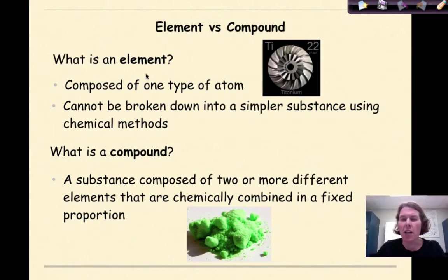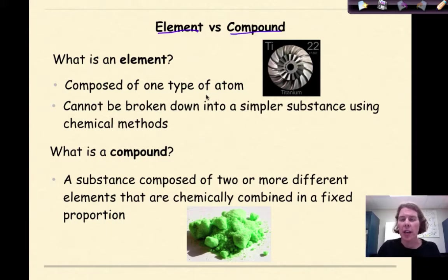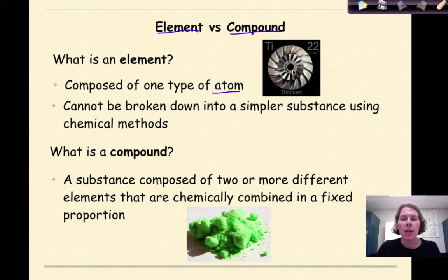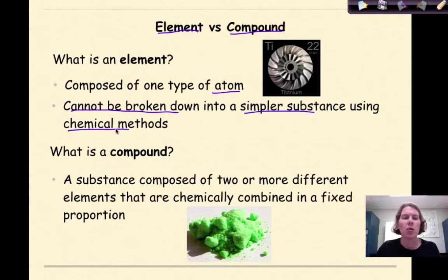Let's start out by talking about an element versus a compound. This goes back to atomic structure, the periodic table, and bonding, so now we're bringing these concepts into the world of chemical formulas. An element is going to be composed of one type of atom — an example here is titanium from Periodictable.com — and an element cannot be broken down into a simpler substance using chemical means.